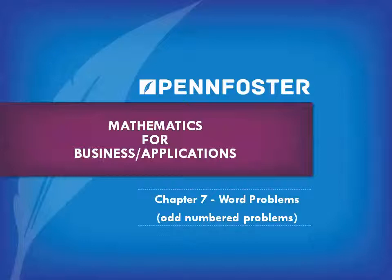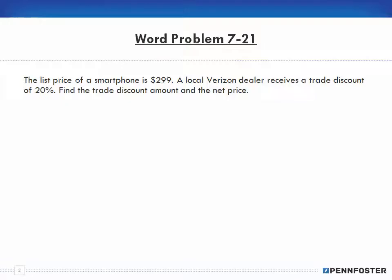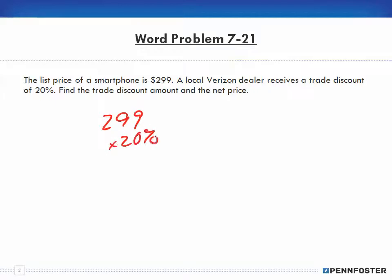Word problem 7-21: the list price of a smartphone is $299. A local Verizon dealer receives a trade discount of 20%. Find the trade discount amount and the net price. This is relatively simple — our list price is $299 and the discount amount is 20%, so we take 20% of $299.